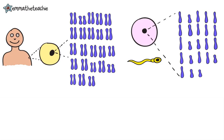In the previous video, we learned that sexual reproduction involves a fusion of gametes, and that gametes are made by the process of meiosis. We're going to learn what meiosis is in this video.